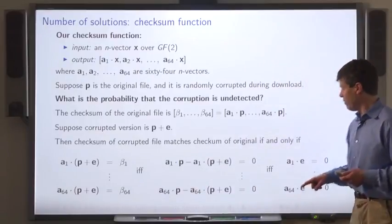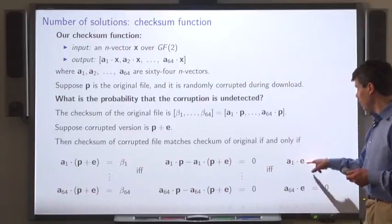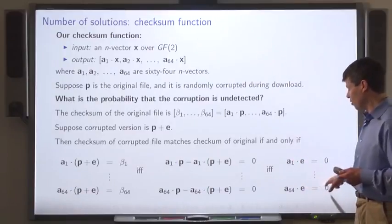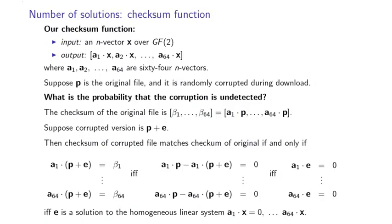And that's true if and only if the error vector satisfies these equations: a1 dot e equals 0 through a64 dot e equals 0. In other words, if e is the solution to the homogeneous linear system, a1 dot x equals 0 through a64 dot x equals 0.